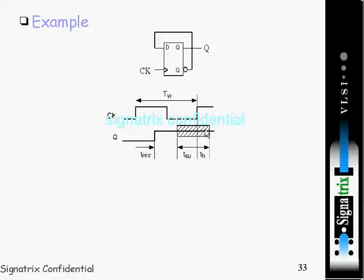And after the occurrence of the active edge, our input must be stable for some time, that is called hold time. So this is the entire window. And the second parameter is propagation delay produced by this flip-flop. That is the delay from here to here, this arrow mark.